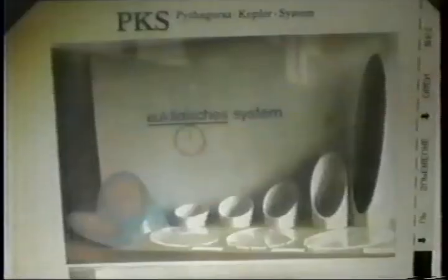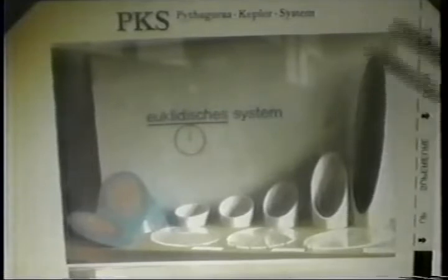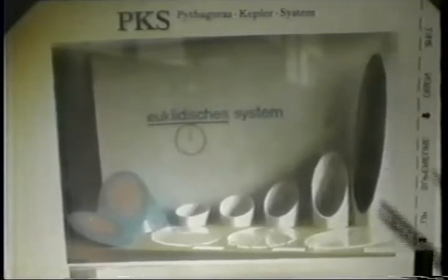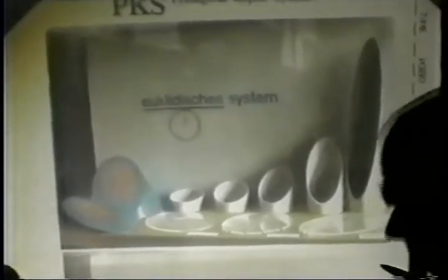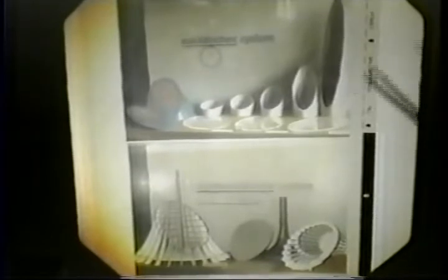We discussed the geometries earlier, and this section puts them more under the limelight because we're actually dealing with the mathematics. This compares the two geometries: the non-Euclidean and the Euclidean. Nicht-Euclidean is non-Euclidean, and Euclidean is the Euclidean system.